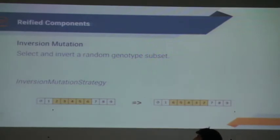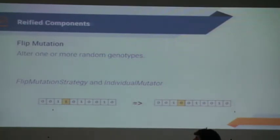Inversion mutation takes a subset of genotypes and reverses them. And the last mutation is different. In this case, you don't change the genotype position, you change the genotype. In this case, it's bits and flip them. If you have one, change to zero. If you have zero, change to one.